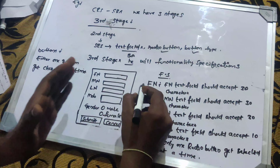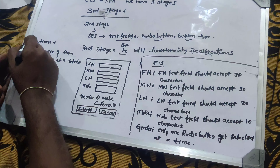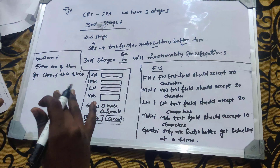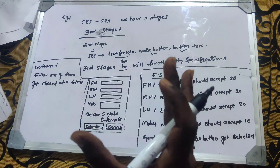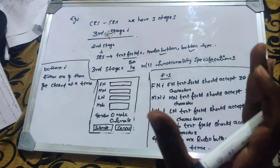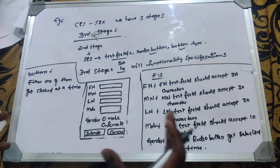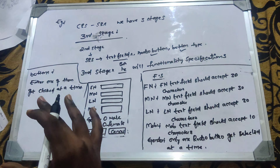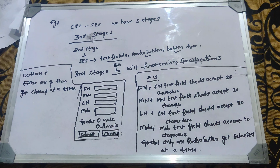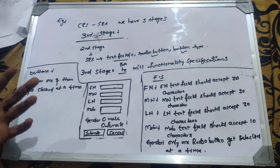This section is called functionality specifications. The text field length is not fixed — it is not fixed for every company. The company can change the length of the text field according to their requirements.